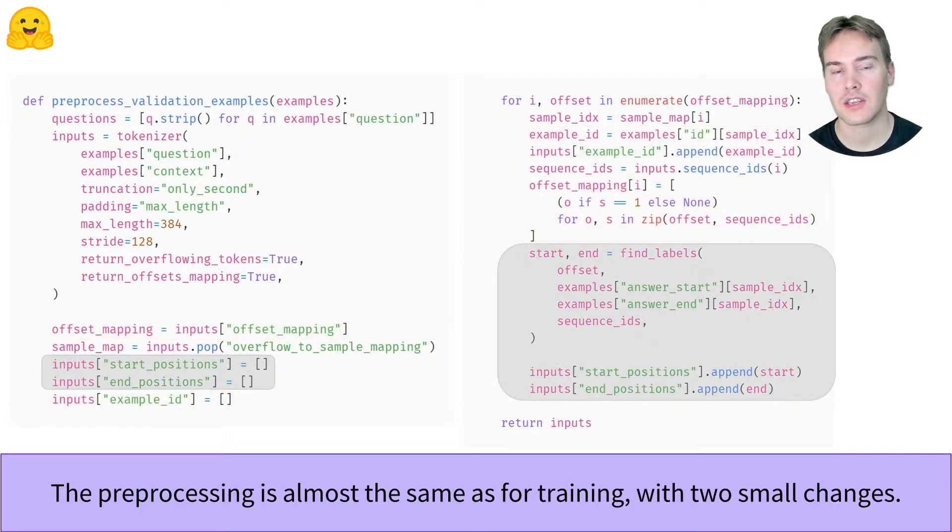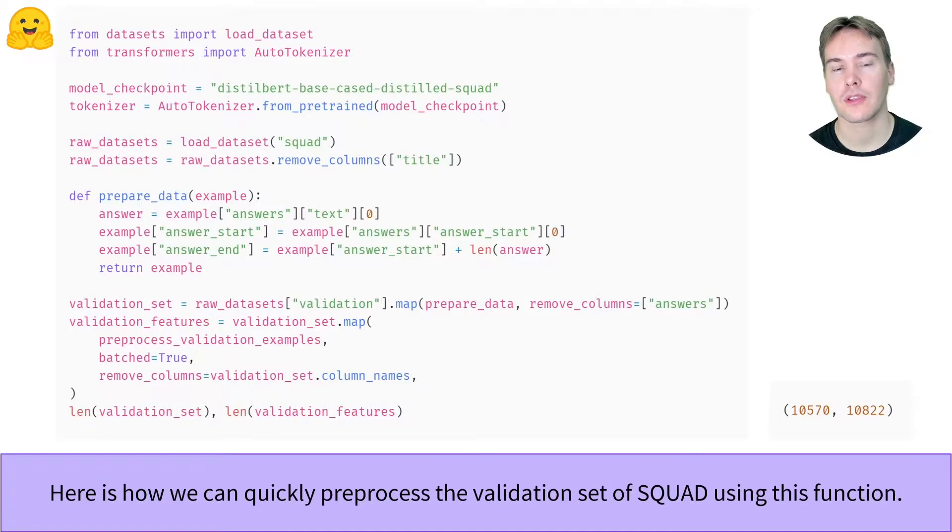If you don't want to compute the validation loss, you won't need to include all the special code that we use to create the labels. With this done, we can apply that preprocessing function using the map method. We take the SQuAD dataset like in the preprocessing for question answering video.